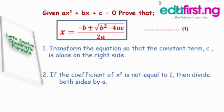According to the rules of completing the square, rule number one says: transform the equation so that the constant term c is alone on the right hand side. That is, move c from equation zero to the right hand side. Once that is done we have ax squared plus bx equals negative c.